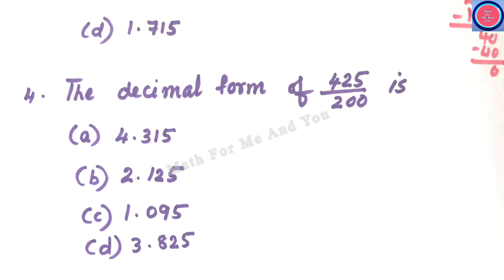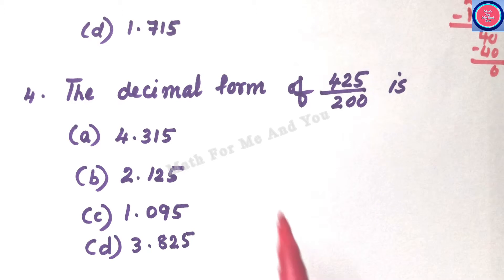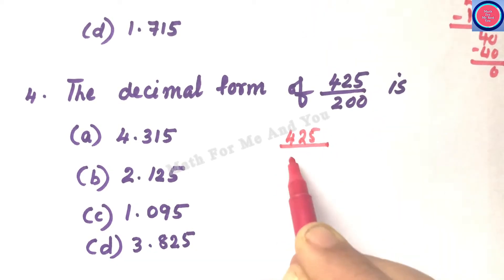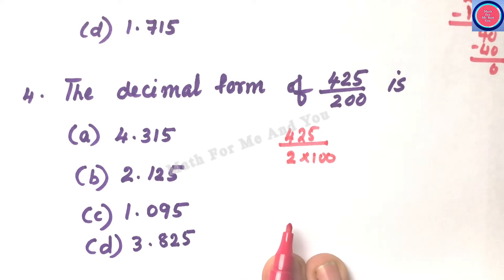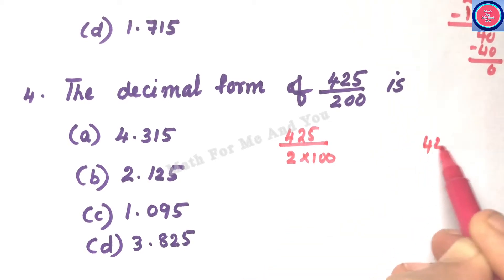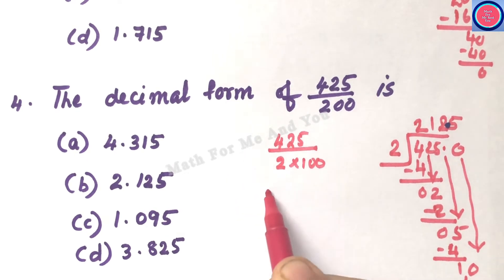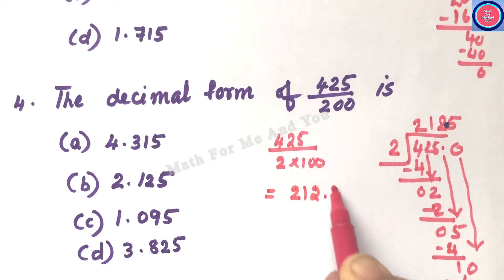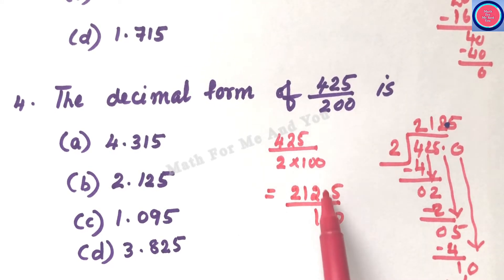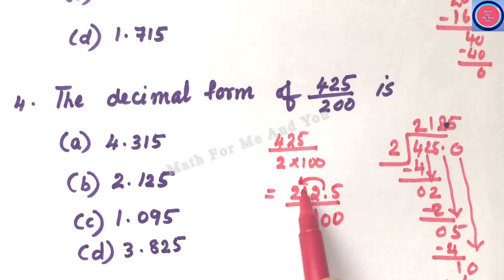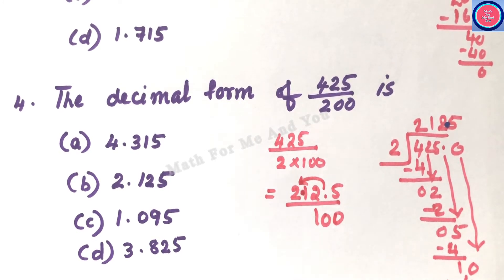Q4: The decimal form of 425 divided by 200. To simplify, split the denominator: 425 ÷ 200 = 425 ÷ (2 × 100). First divide 425 by 2 to get 212.5, then divide by 100 by moving the decimal point 2 places to the left, giving 2.125 — that is option B.